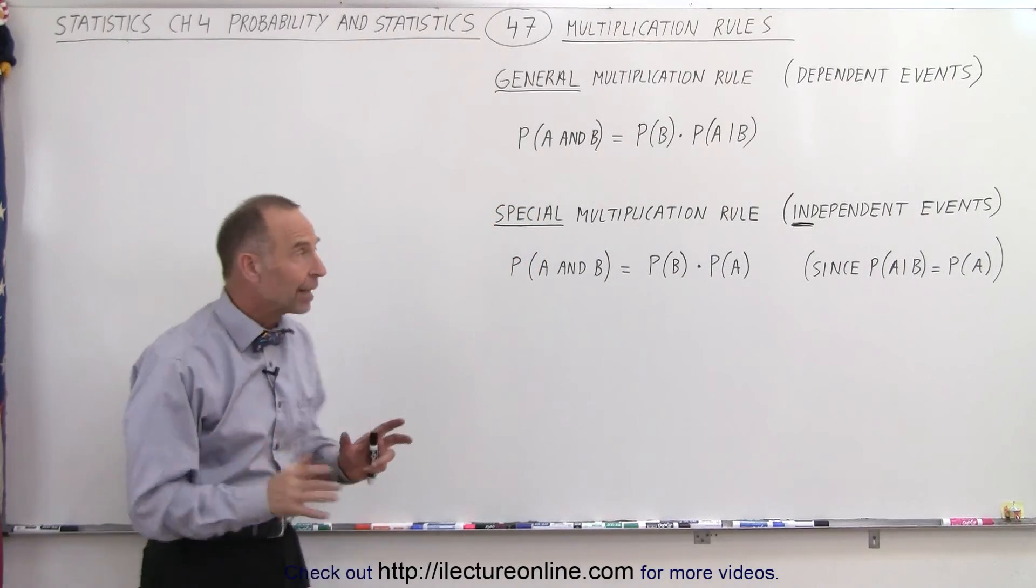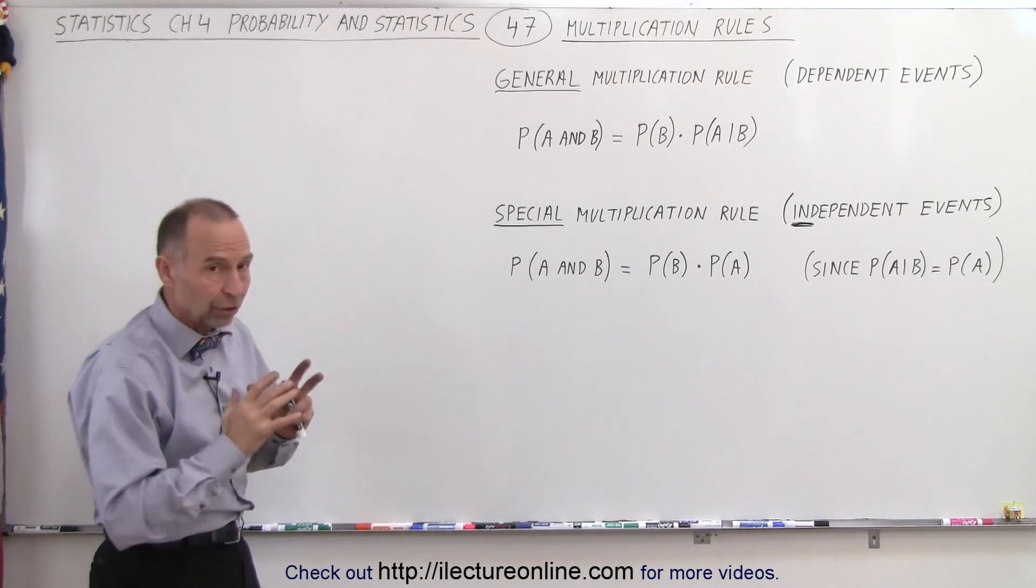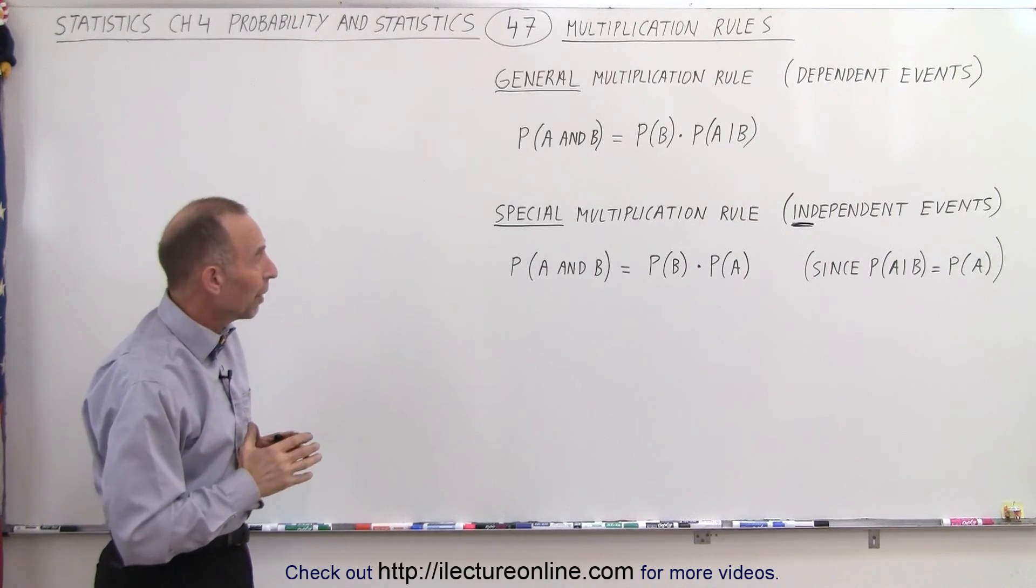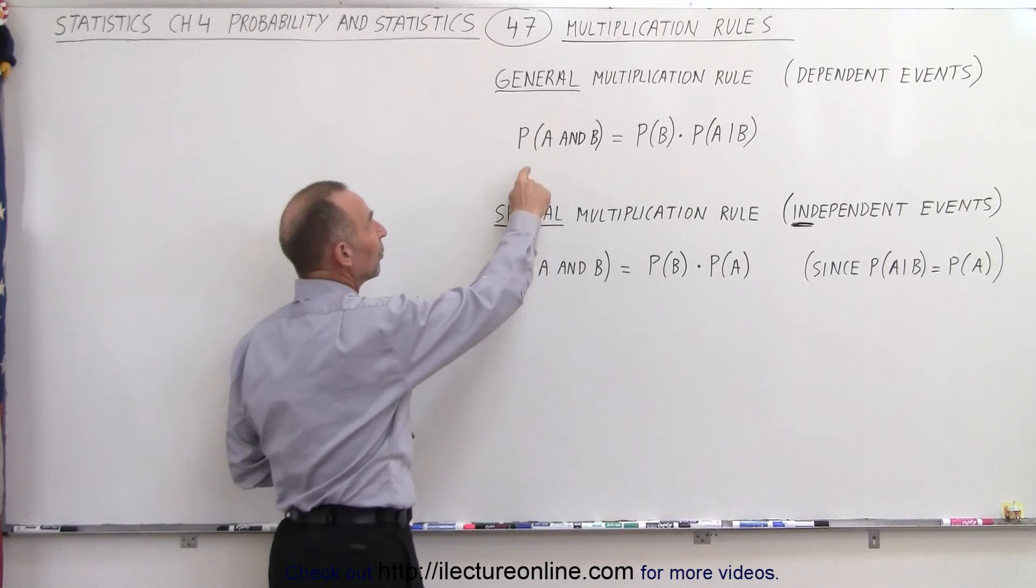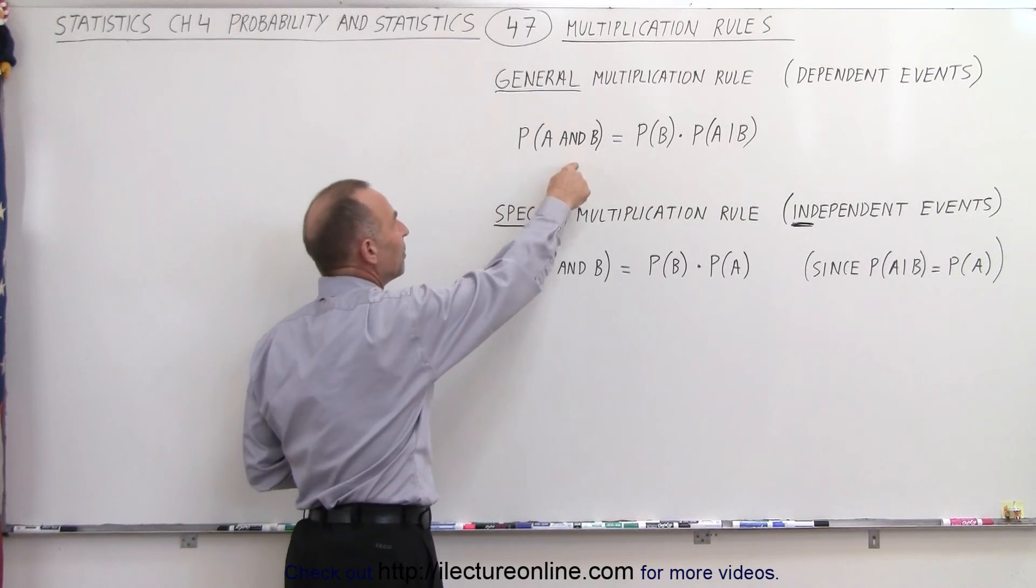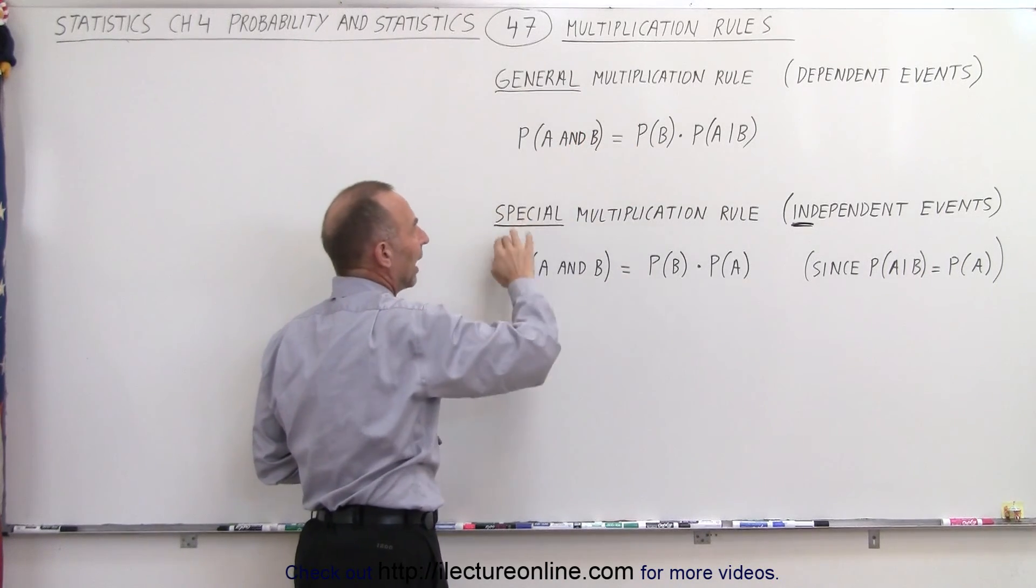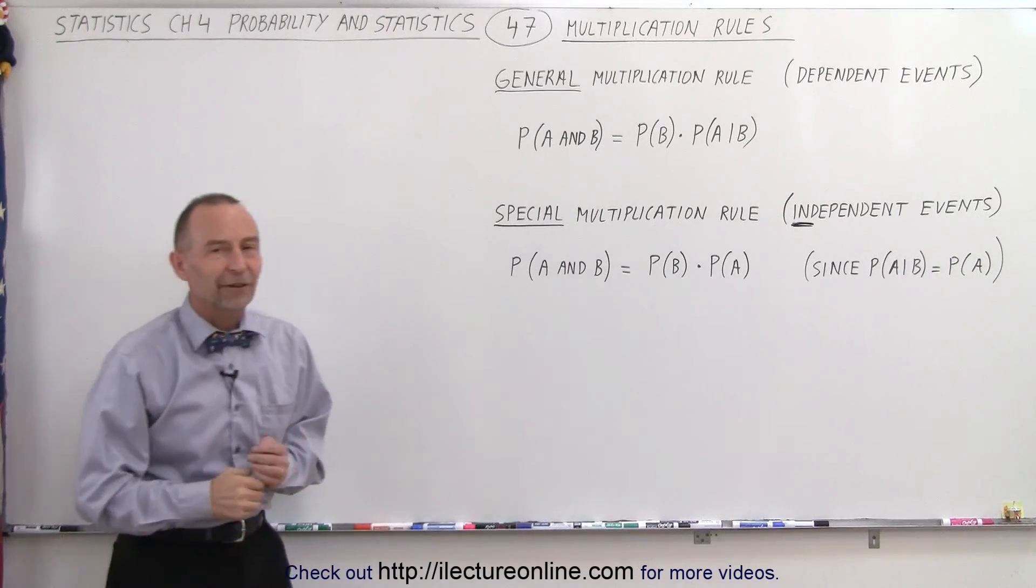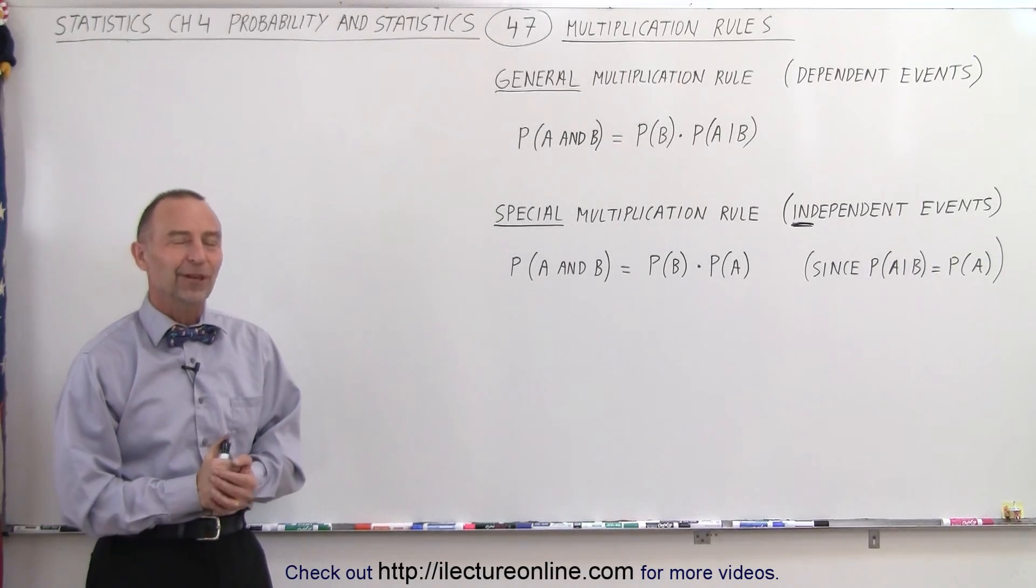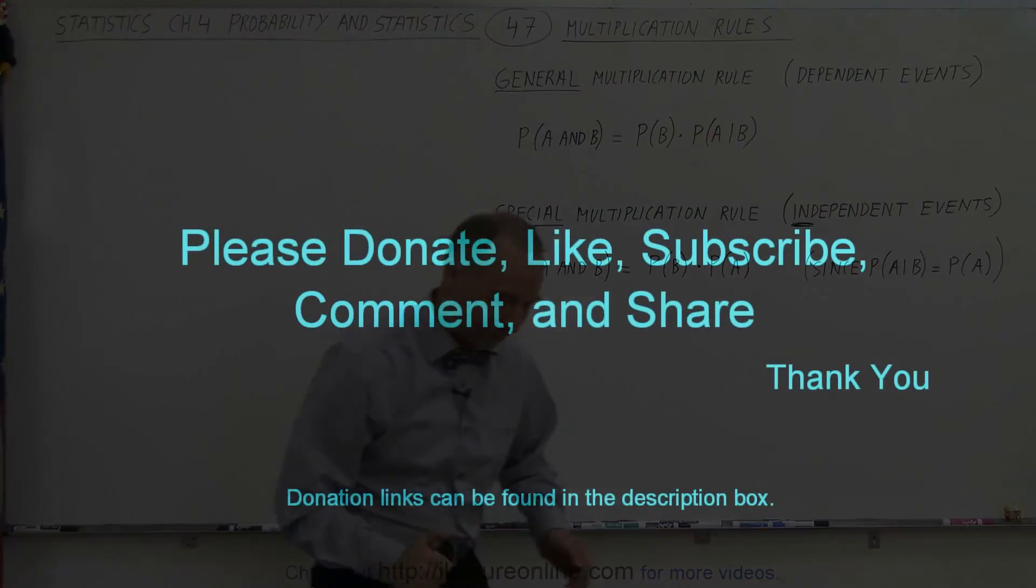Keep that in mind. This is how we look at the general and special multiplication rules when we're dealing with the probability of A and B in the case of dependent and independent events. And that is how it's done. Thank you.